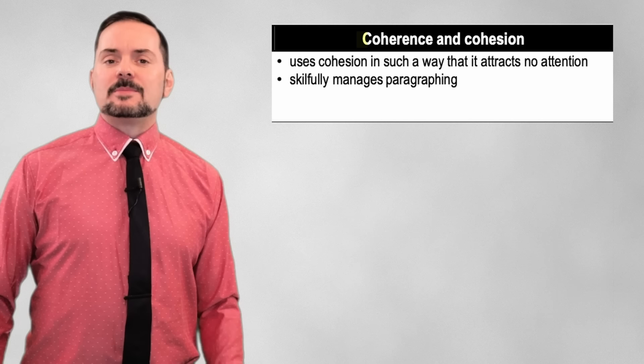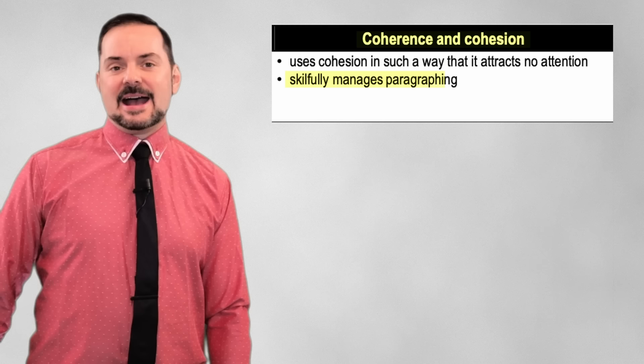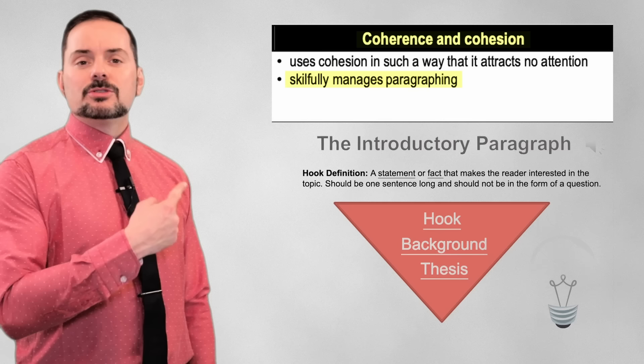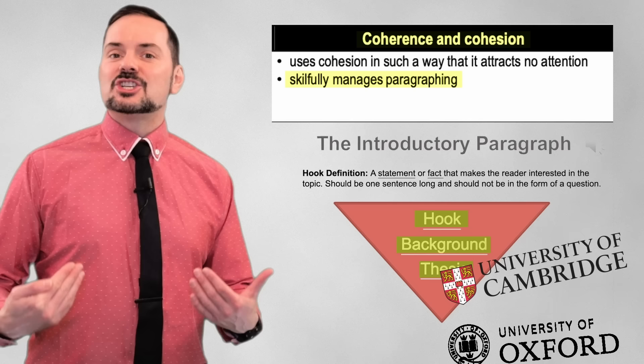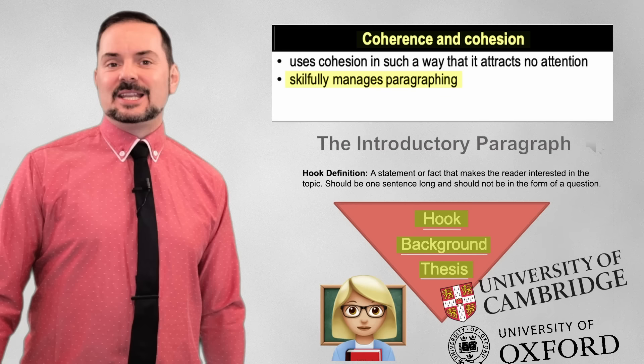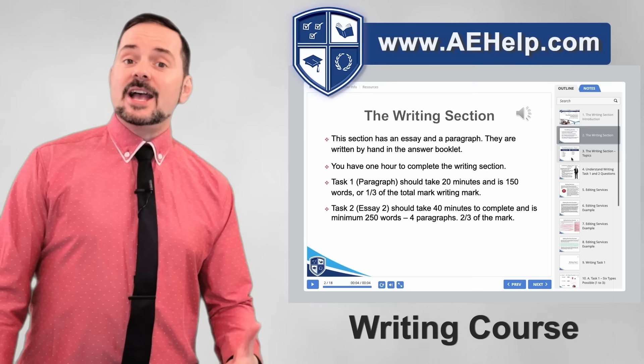Looking at the category of coherence and cohesion for Band 9, the description states that the author skillfully manages paragraphing. This means the writer clearly understands the components of an introductory paragraph. A good introductory paragraph will have a hook, some background information, and a direct thesis. This is not my advice — this is standard English essay writing practice at the college and university level.